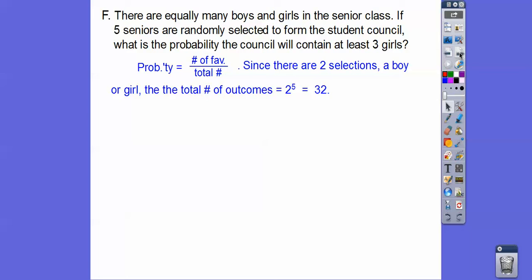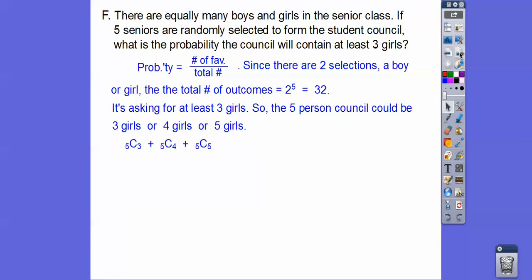Probability. Since there's two selections, either a boy or a girl, and we're picking five of them, so that's 2 to the fifth, or there's 32 outcomes. That's the bottom number right there, 32. So it's asking for at least three girls. So the five-person council, which is 5 choose, we can do three girls or four girls or five girls because it says at least three girls. These are all combinations, so we plug them in, and we get 16. That's our top number. So 16 out of 32 reduces to one-half.